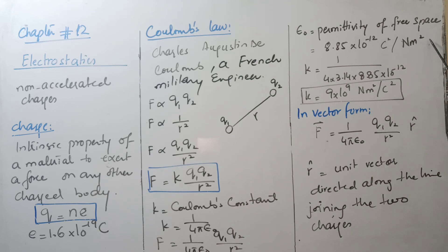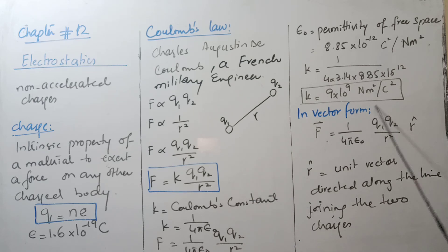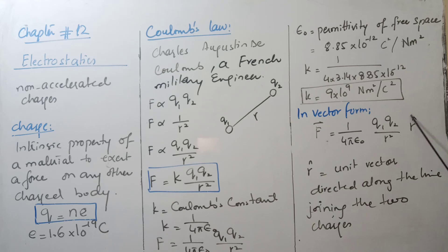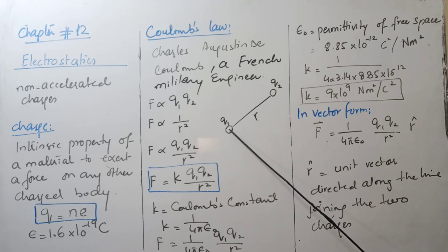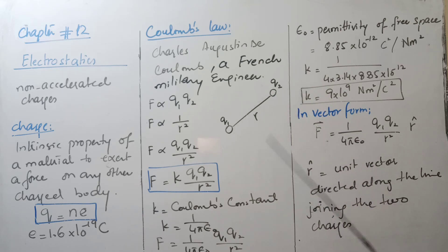Remember, in board exam questions, the units of ε₀ and k are often asked and can create confusion — memorize them well. Since force is a vector quantity, we have found its magnitude; now for vector form: F⃗ = (1/4πε₀) · (q1·q2 / r²) · r̂, where r̂ is the unit vector directed along the line joining the two charges. The direction of force is either attractive or repulsive, always along this line — parallel to it, never perpendicular.